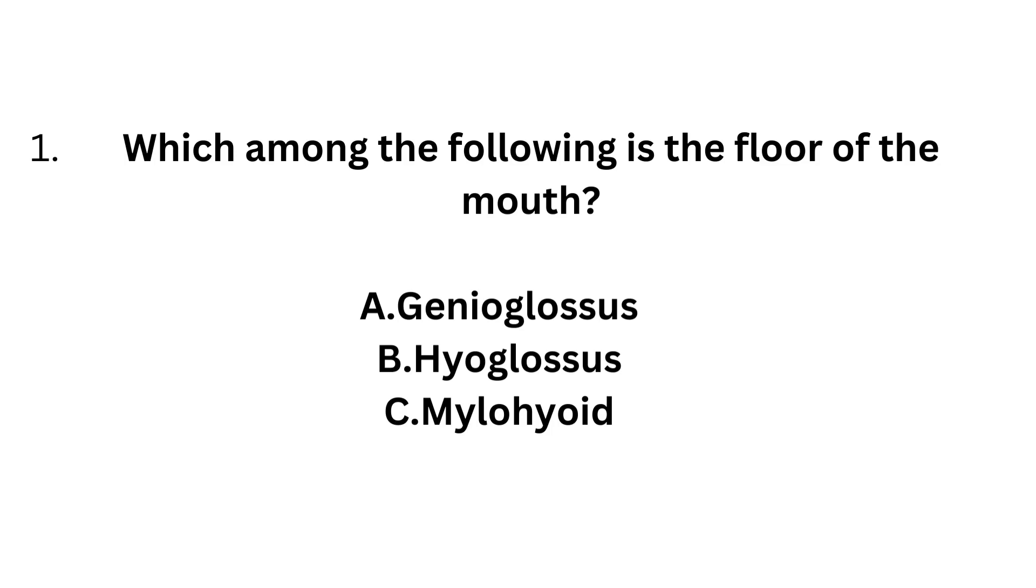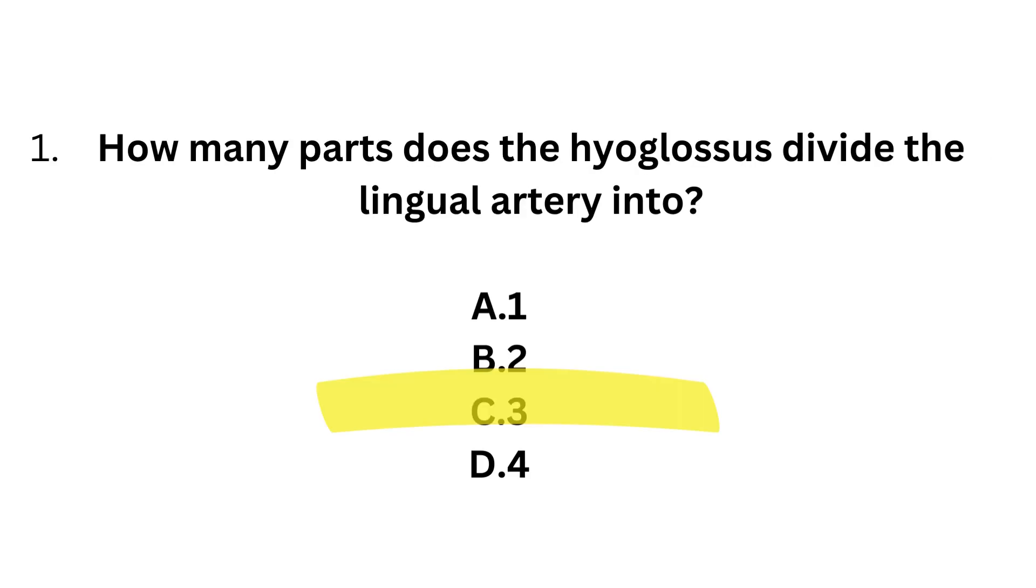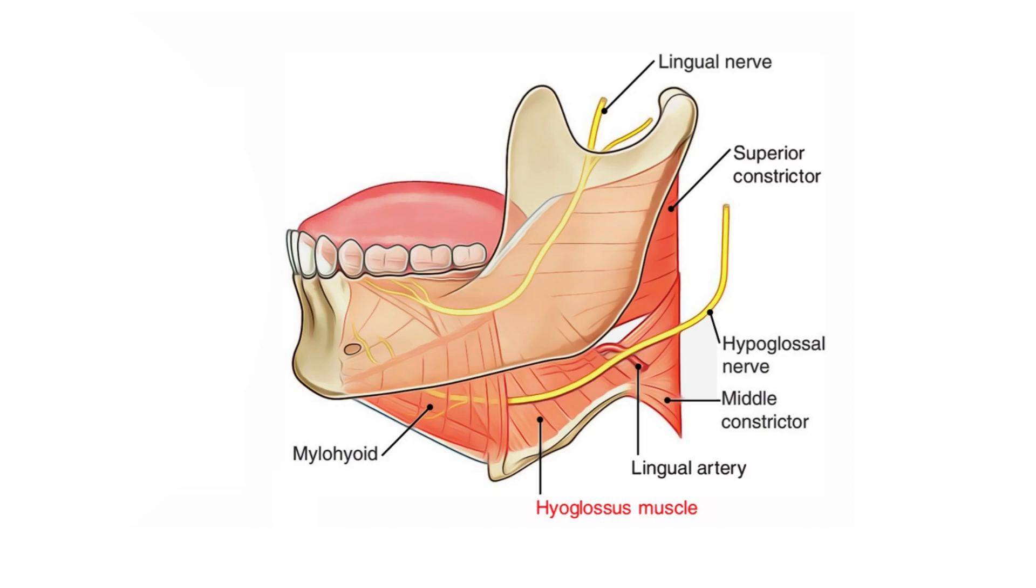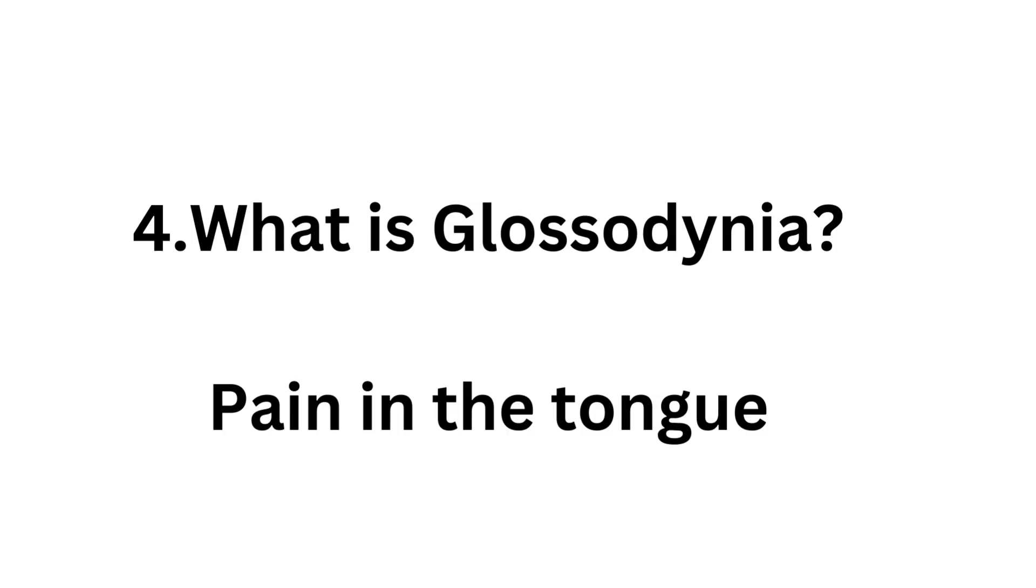There could be a question asking which is the floor of the mouth, with options like genioglossus, hyoglossus, and mylohyoid. The answer is mylohyoid. Second question: how many parts does hyoglossus divide the lingual artery into? It's three. Next question: which is the nucleus of taste? That is nucleus solitarius. Another question: what is glossodynia? That is pain in the tongue.